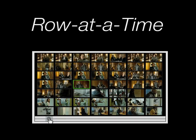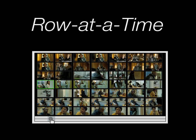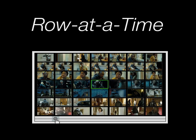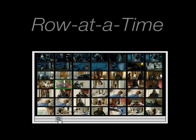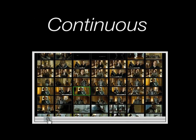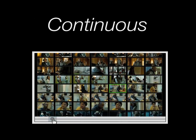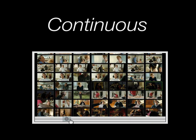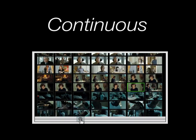With row-at-a-time scrolling, the grid updates at the end of each row. And with continuous scrolling, the grid continuously scrolls up and down as the playhead moves along the timeline.